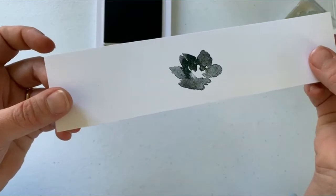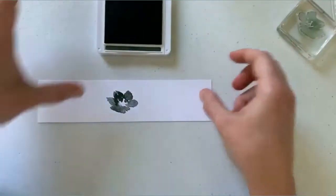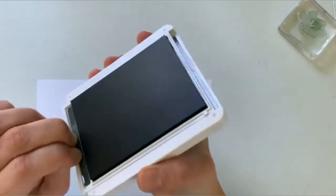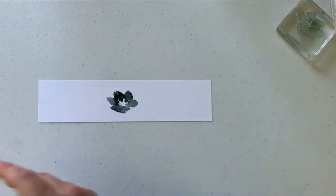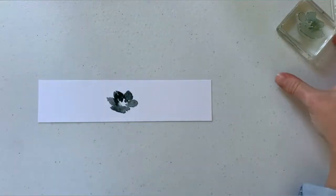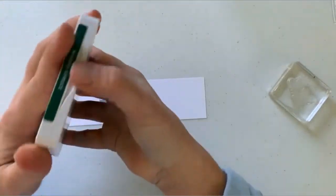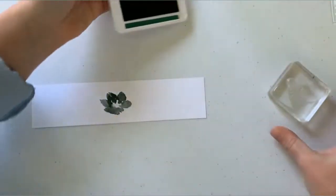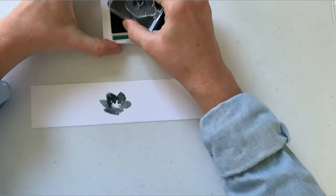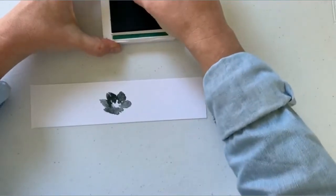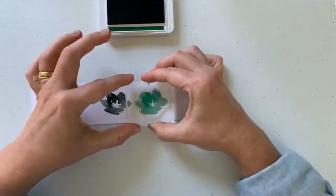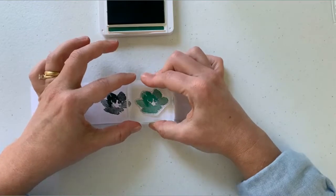Keep in mind when you stamp an image it always stamps darker and will lighten as it dries. That's Evening Evergreen. To the right of it I'm going to stamp Shaded Spruce, which I love so much. I can see the brightness of it already compared to the Evening Evergreen.